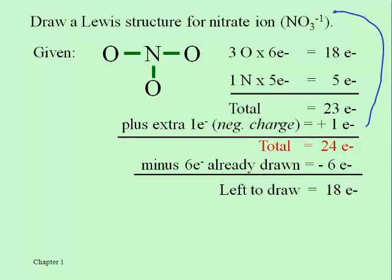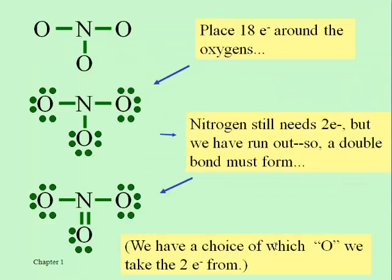Polyatomic ions like nitrate work the same way, with the exception that a negative charge is an extra electron we have to include in our total. So whereas I would normally count 23 electrons for nitrate, that negative charge means there are 24. If it were a positive charge we would take away an electron — atoms make those adjustments when doing so is more stable. With 24 total electrons, I'm going to have to put a double bond between nitrogen and one of those oxygens in order to satisfy the octet rule for all atoms.